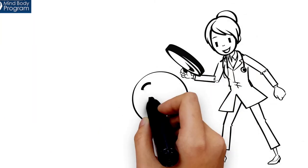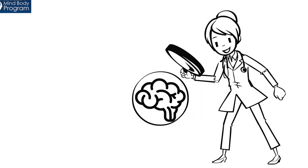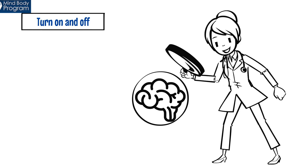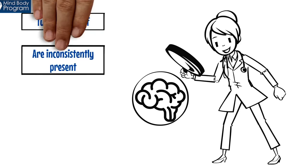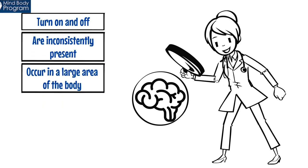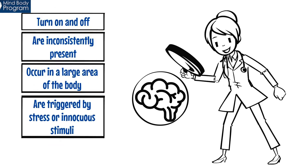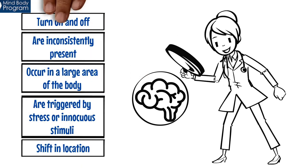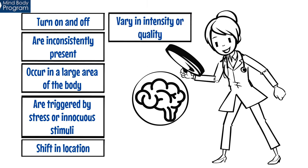Clues that a good detective doctor can use to confirm a neural circuit disorder are pains or symptoms that turn on and off, are inconsistently present, occur in a large area of the body, are triggered by stress or innocuous stimuli, shift in location, or vary in intensity or quality.